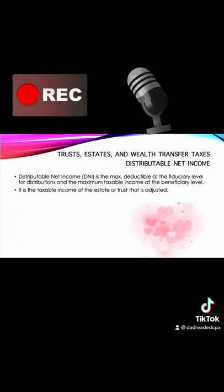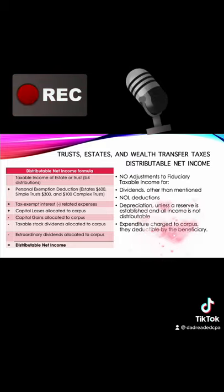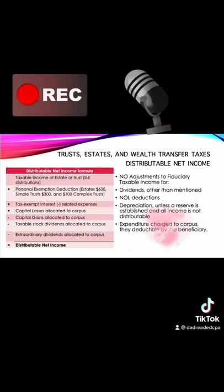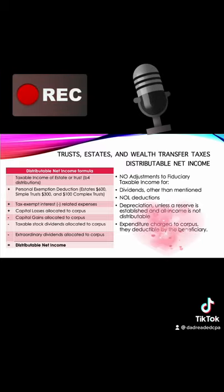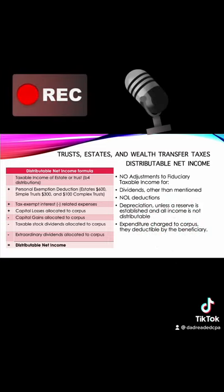The distributable net income is basically the taxable income of the trust or estate with several adjustments. The first adjustment is the personal exemption deduction. Trusts and estates have those exemptions — they're almost considered as another person — and that breaks down to $600 for the estate, $300 for the simple trust, and $100 for the complex trust.